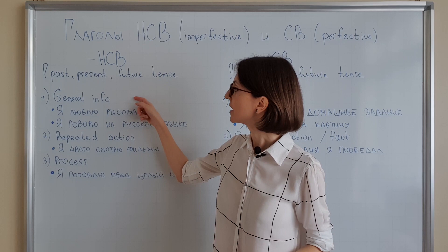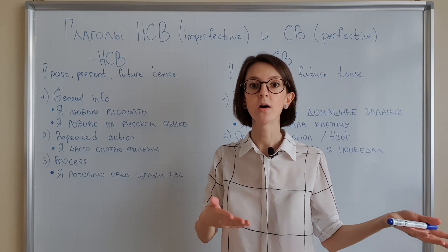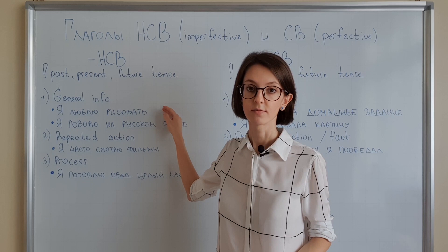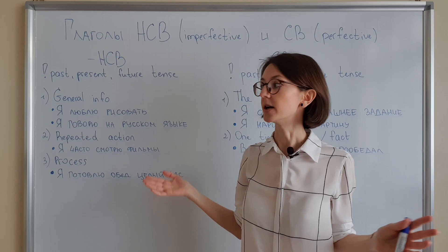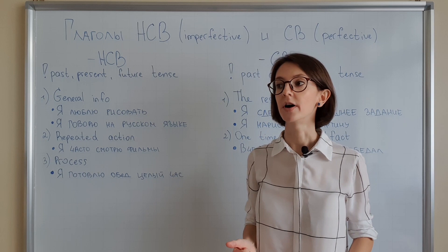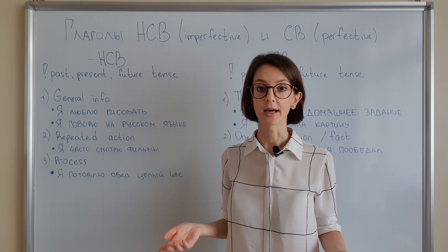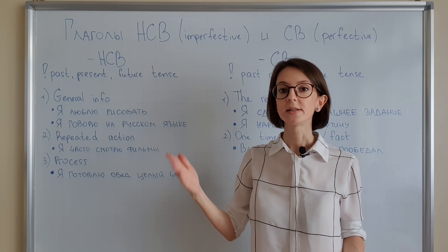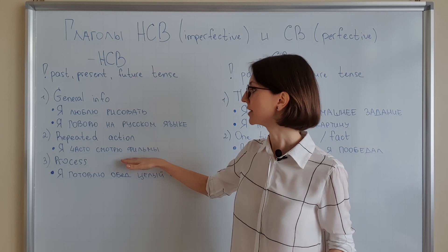When do we use NSV verbs? Point number one: when we give some general information about yourself or about somebody else. For example: я люблю рисовать (I love to draw), or я не люблю рисовать. General information. Я говорю на русском языке, я говорю на английском языке, но я не говорю на китайском языке. Number two: repeated action — when something happens regularly.